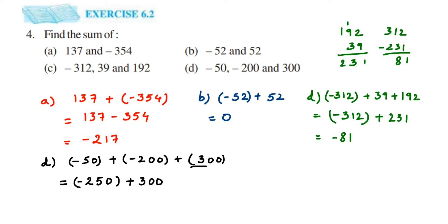Now we have -250 + 300. Different signs mean we subtract: 300 - 250 = 50. What is the sign? 300 is greater and its sign is positive, so we get +50. You can simply write 50 as the final answer. I hope it's clear how we solved these and applied the rules.